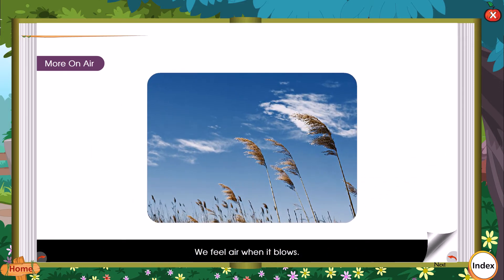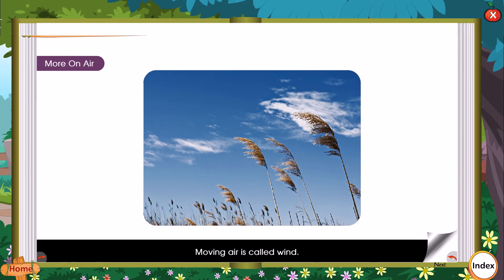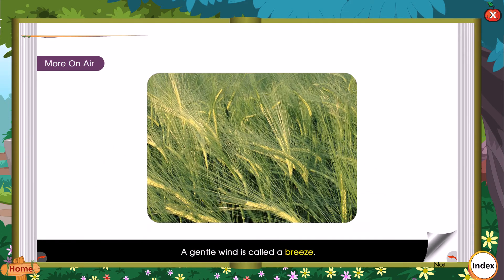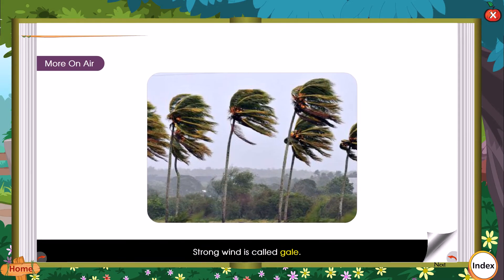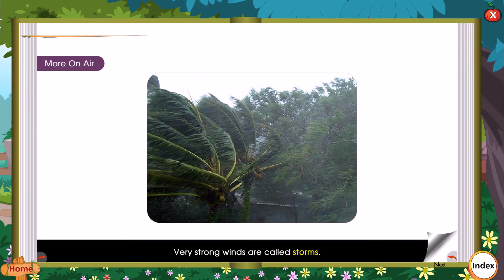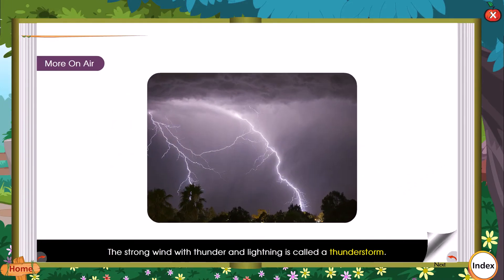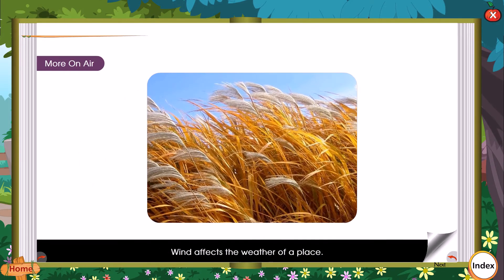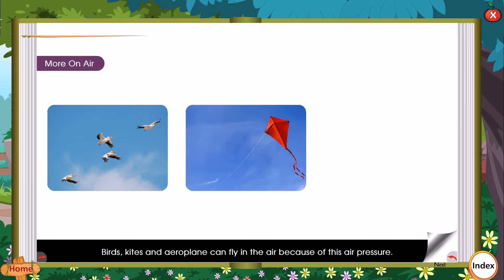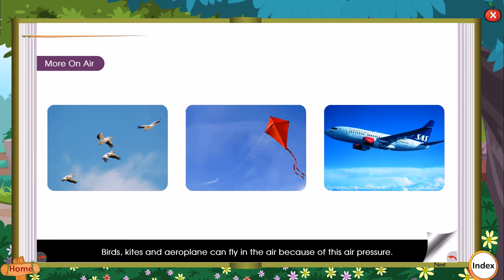The atmosphere protects us from the harmful rays of the sun. We feel air when it blows — moving air is called wind. A gentle wind is called a breeze. Strong winds are called gales. Very strong winds are called storms. Strong winds with thunder and lightning are called a thunderstorm. Wind affects the weather of a place.